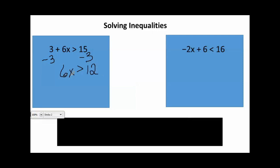6x means 6 times x. When we want to get rid of something that's being multiplied, we do the opposite — we're going to divide both sides by 6. This now leaves me with x is greater than 2.